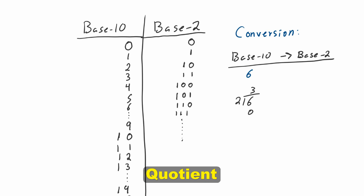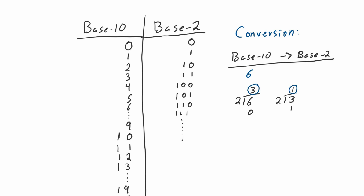What you do next is take the quotient — the number three — and divide it by two. Two goes into three one time and gives you a remainder of one. Then you take that quotient and divide it by two again: one divided by two — two does not go into one any time, so it goes zero and gives you a remainder of one. You stop when the quotient has reached zero. The sequence of remainders read from right to left will be the number represented in base two. So we have 1-1-0, which is equivalent to six. Six in binary is 1-1-0.